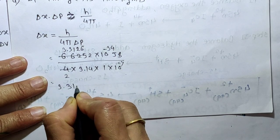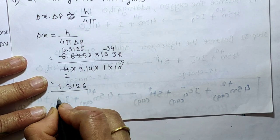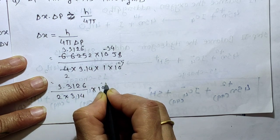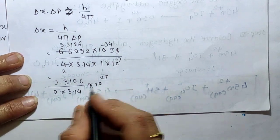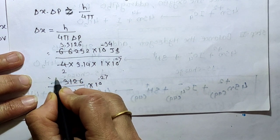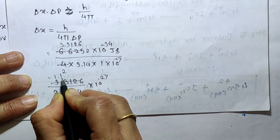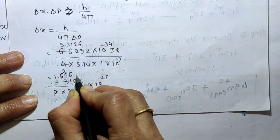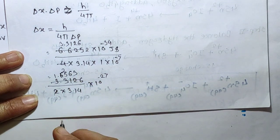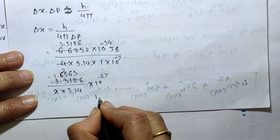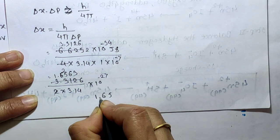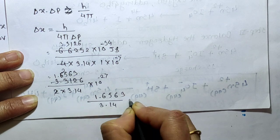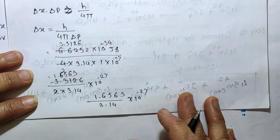Continuing the calculation: 3.3126 divided by 3.14 into 10 raise to minus 27, then further simplified to 1.663 divided by 3.14 into 10 raise to minus 27.